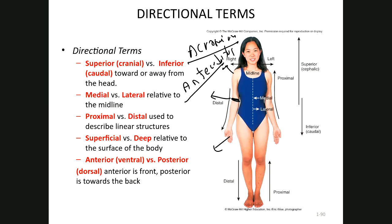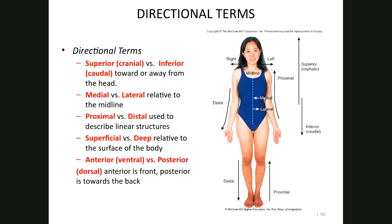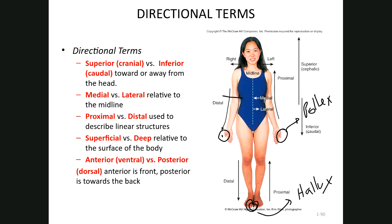Proximal and distal are used to describe the position of structures in the limbs — upper and lower. The thumb, which is called the pollux, and the toes, called the hallux, are terms to know as well. We can say the hallux is medial to the pollux, and the pollux is distal to the antecubital area — always assuming the anatomical position.